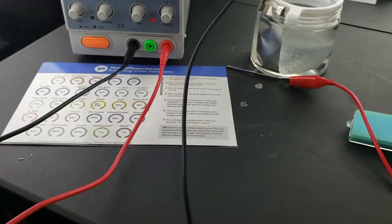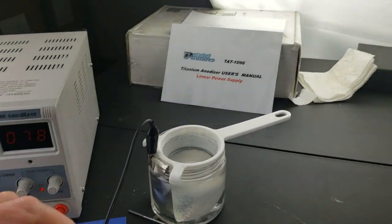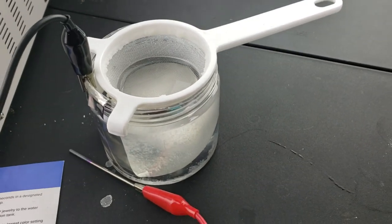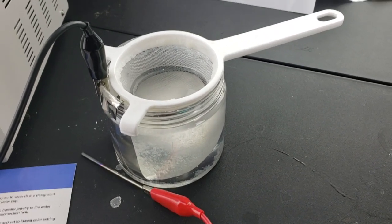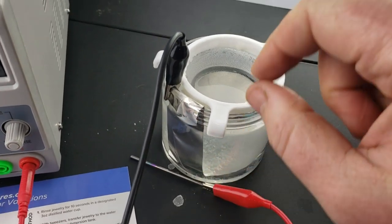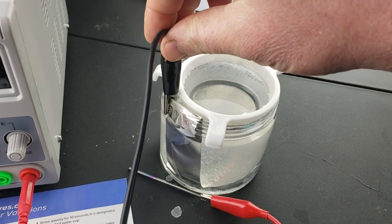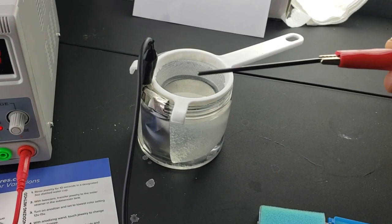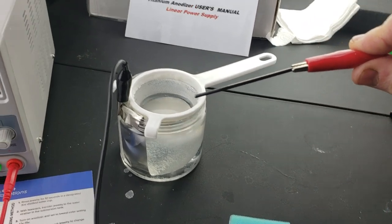The only thing you really control is the black node which goes into this solution with TSP dissolved in water and a little foil sheet. The black node gets connected here, and then you've got the red or positive node which is what you touch the titanium abutment with to anodize it.